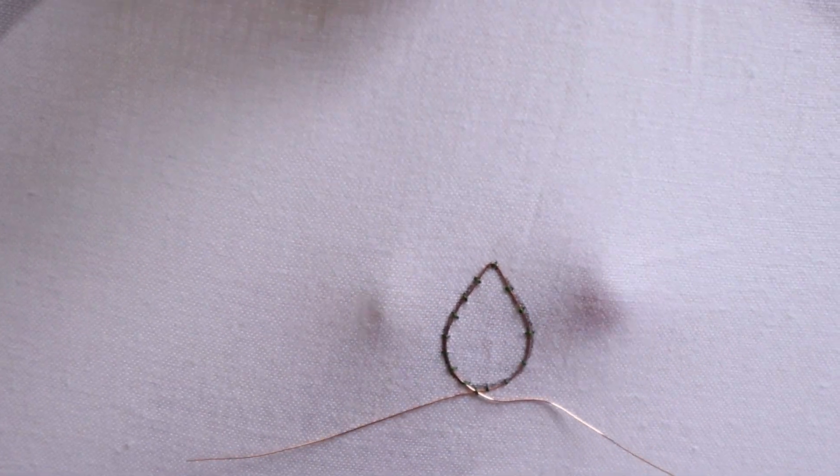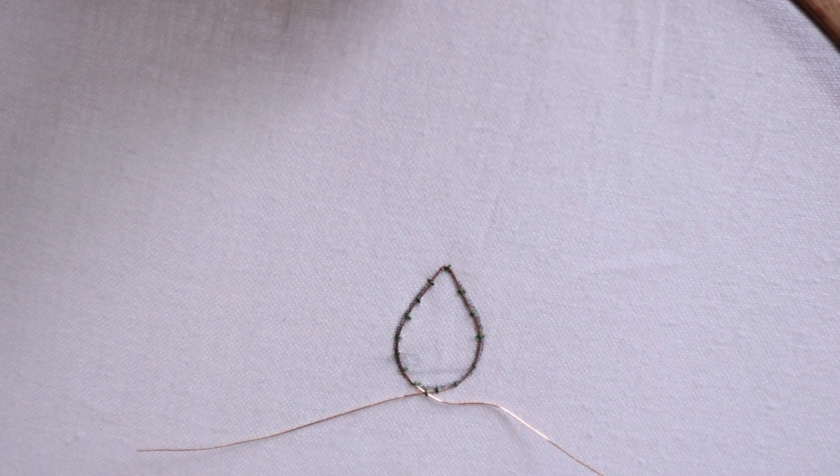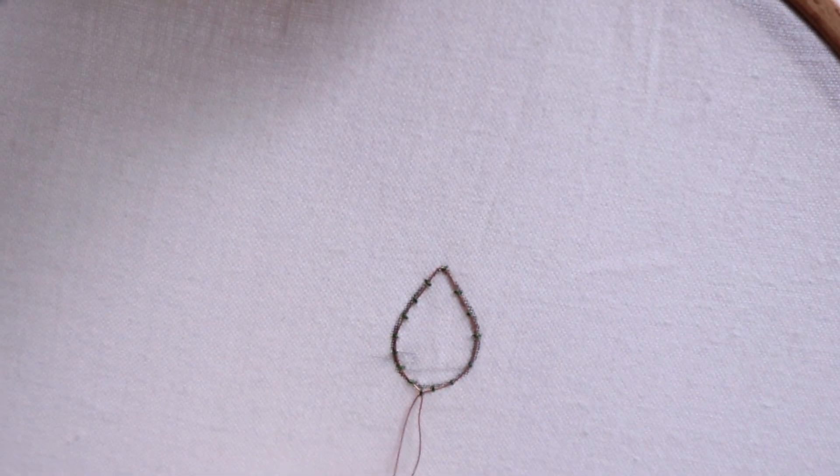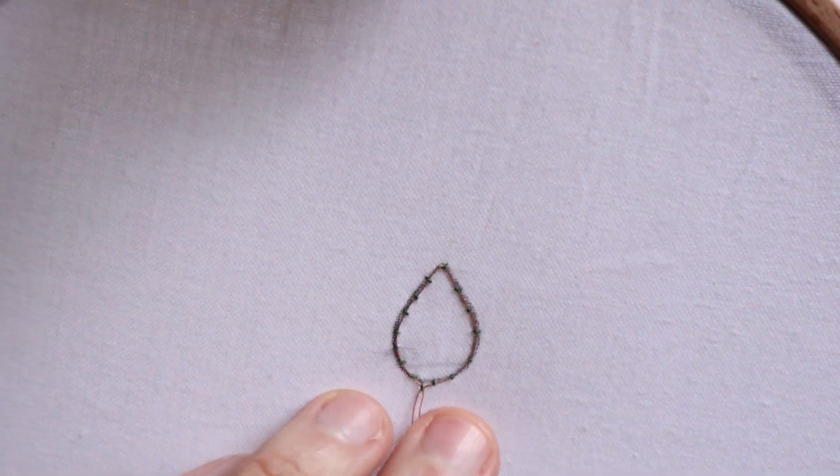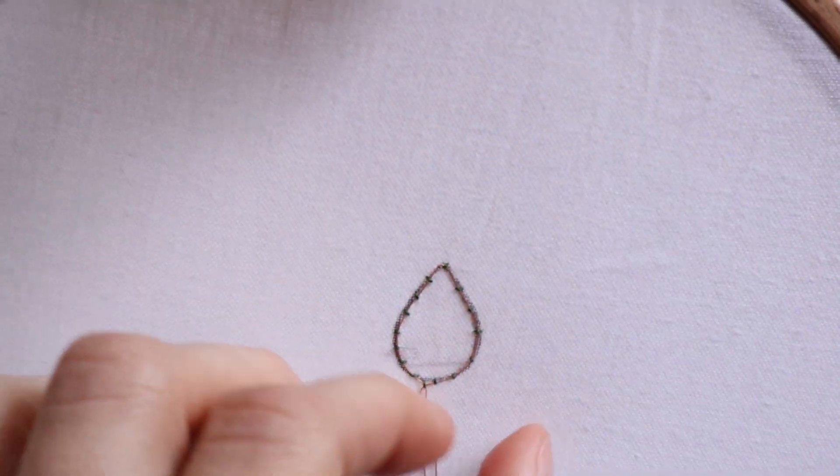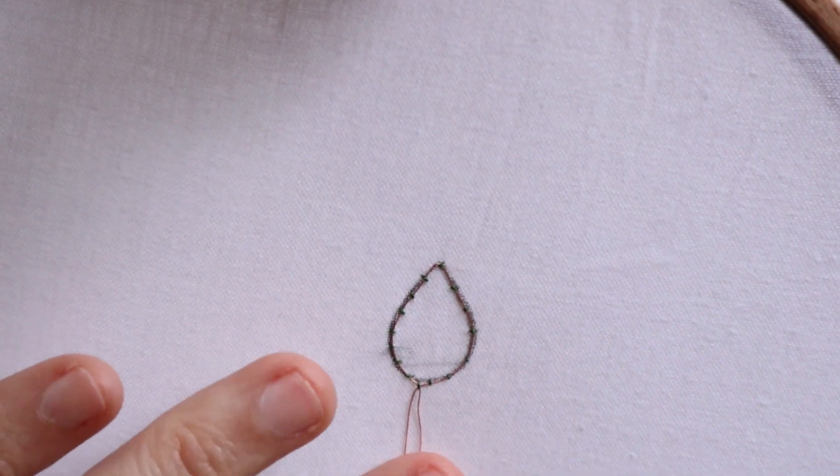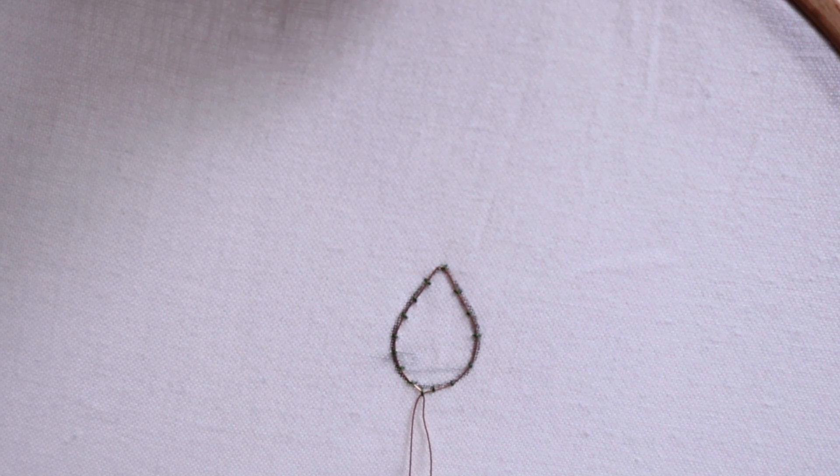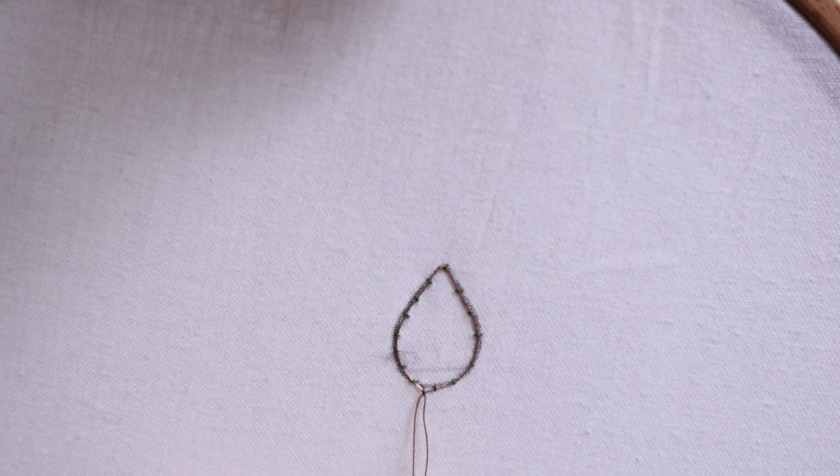I'm gonna just flip this over and secure the thread in the back. You can also pull these tails down to get them out of your way. Don't cut these or anything, just leave them be. I like to straighten them out so they're not flying around as I'm stitching. Then I will show you how you can finish this leaf up.